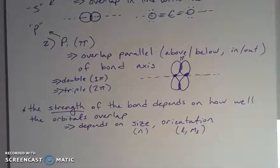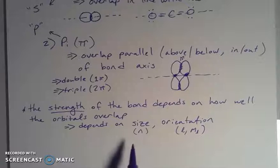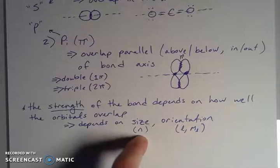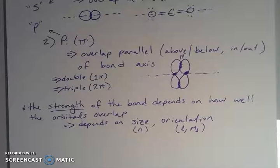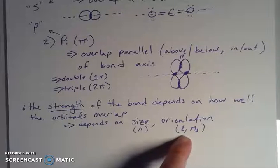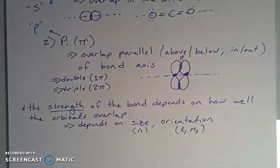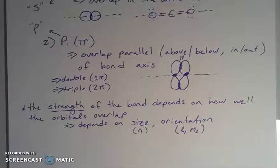There are a couple of features that determine how strong a bond is. It can be based on the size of the orbital — that's the principal quantum number n, which gives the energy and how far the electrons are from the nucleus. The orientation of the orbital also matters — that's our angular momentum quantum number l, and the magnetic quantum number ml, which gives the type and orientation of the orbital.